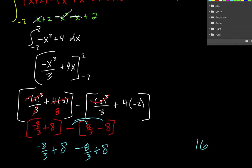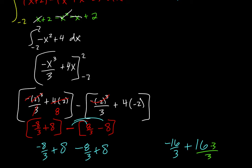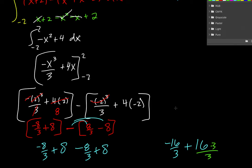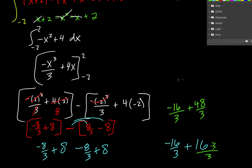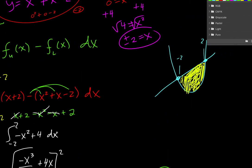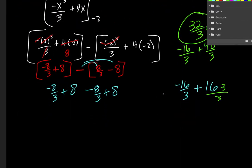So the 8's combined to make 16. The negative 8 thirds combined to make negative 16 thirds. And we can multiply this by 3 over 3. So 16 times 3 is 48. So we have negative 16 thirds plus 48 thirds. So that gives us 32 thirds. And once again, that's an area, so that would be units squared. And it describes this region between the parabola and the line.